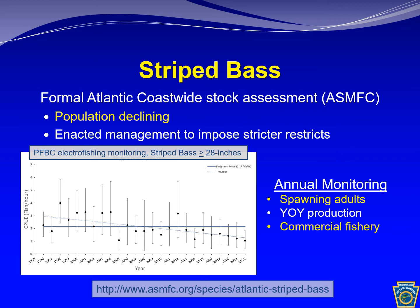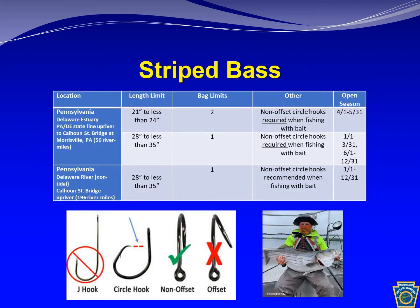A stock assessment was recently completed for striped bass by the Atlantic States Marine Fisheries Commission. Findings concluded the striped bass population was declining coast-wide and mandated implementation of stricter regulations. The Pennsylvania Fish and Boat Commission annual monitoring data reflect this conclusion for spawning adults in the Delaware Estuary. Within Pennsylvania, fishing regulations were adjusted to reflect Atlantic States Marine Fisheries Commission mandates. In the Delaware Estuary waters below the Calhoun Street Bridge at Morrisville, Pennsylvania requires the use of non-offsetting circle hooks when using bait, whether or not an angler is specifically targeting striped bass.